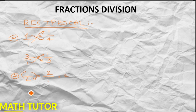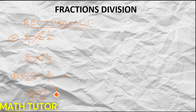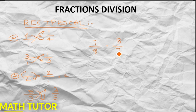Let us take one more fraction: 5 by 3. In this, the numerator will go to the denominator's place and the denominator will go to the numerator's place, so that equals 3 by 5. If I asked you what is the reciprocal of 7 by 8 — it is 8 by 7.